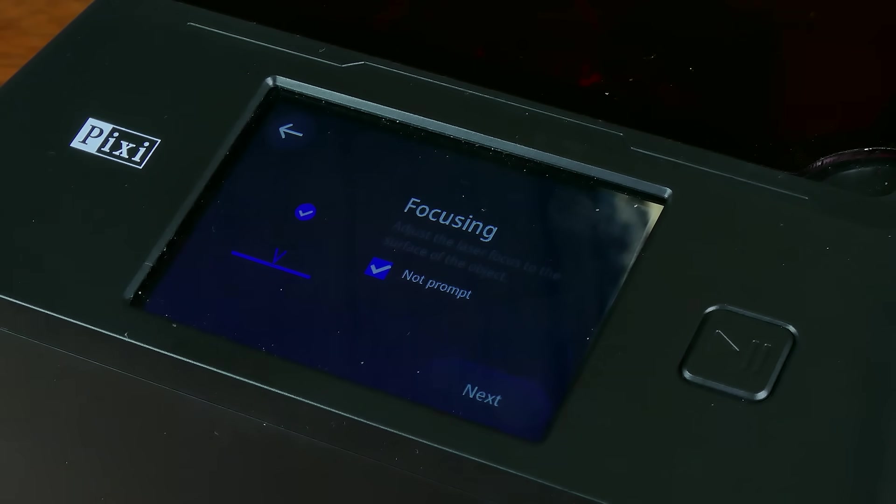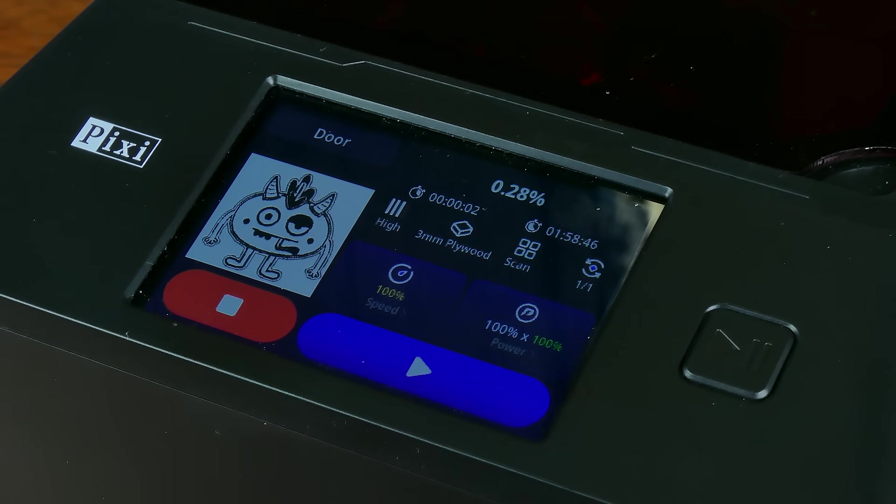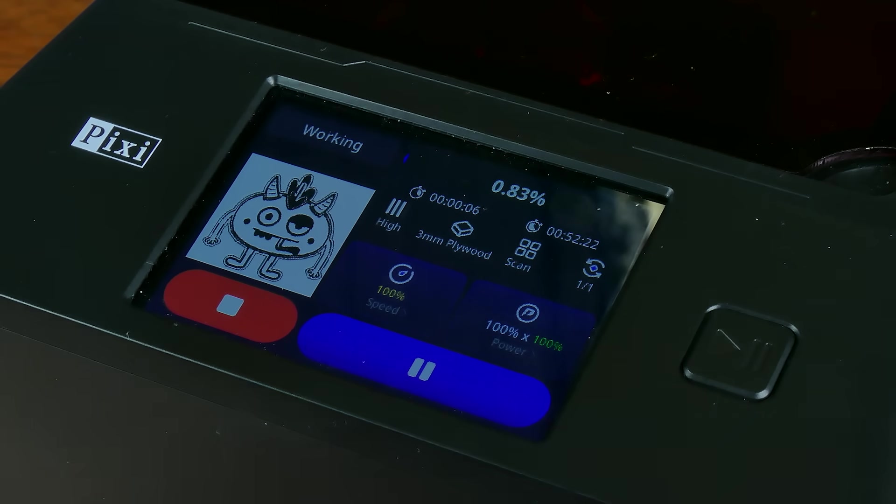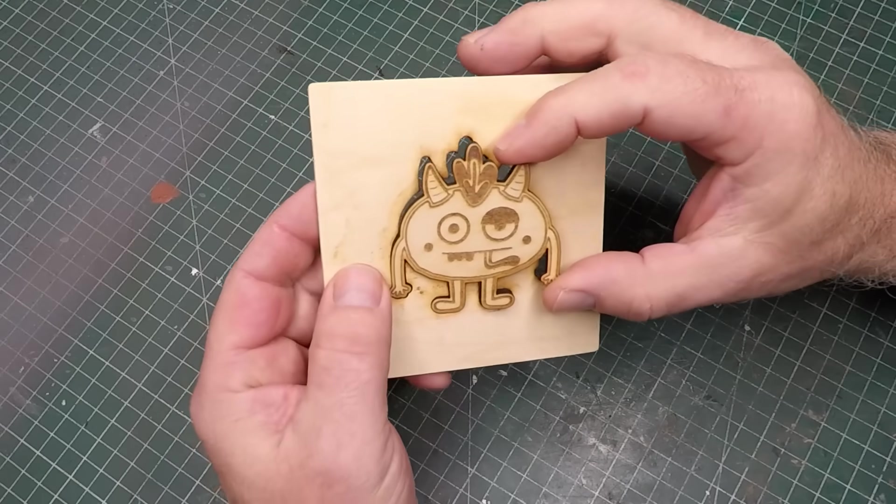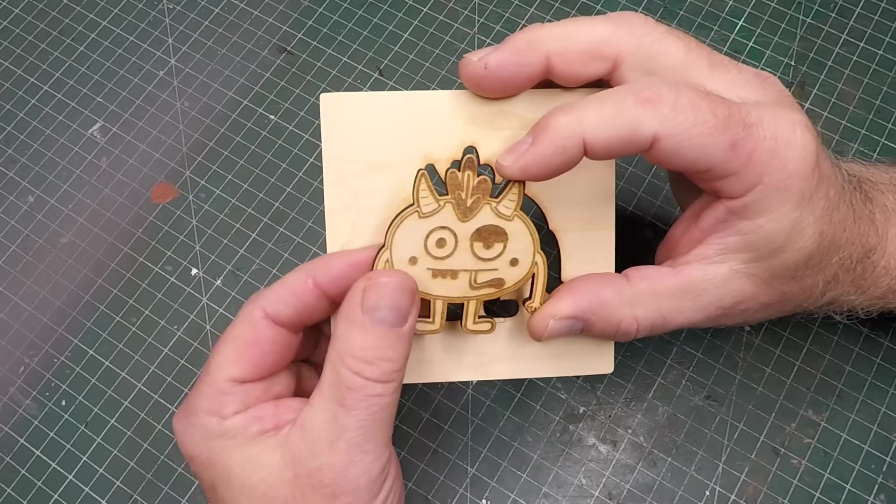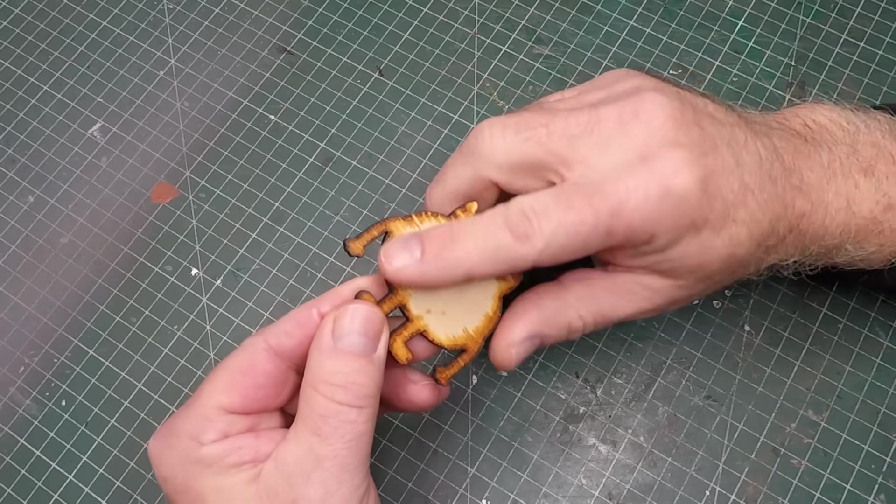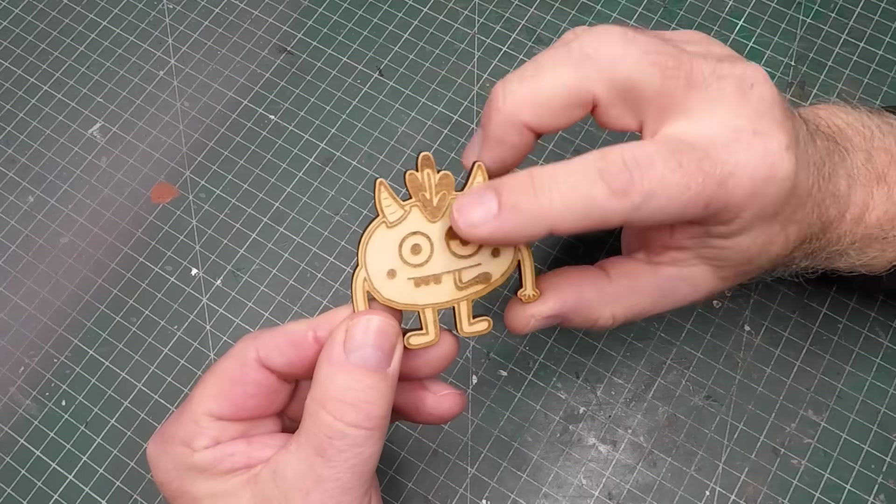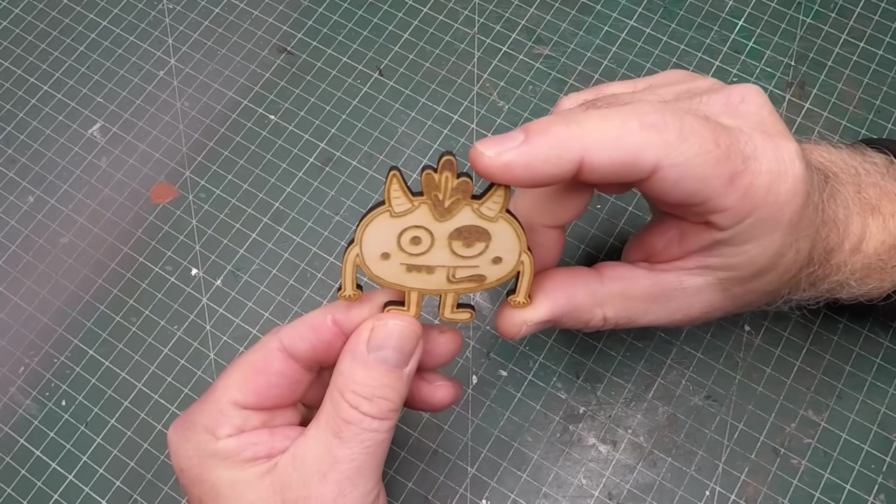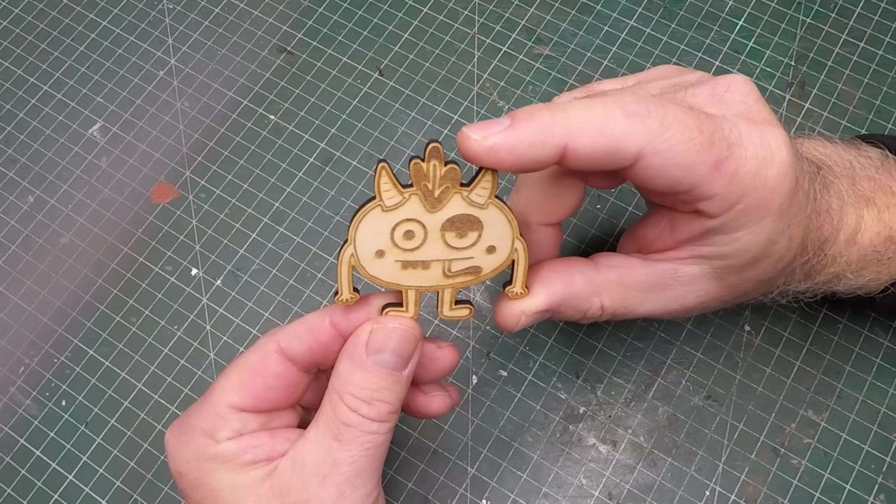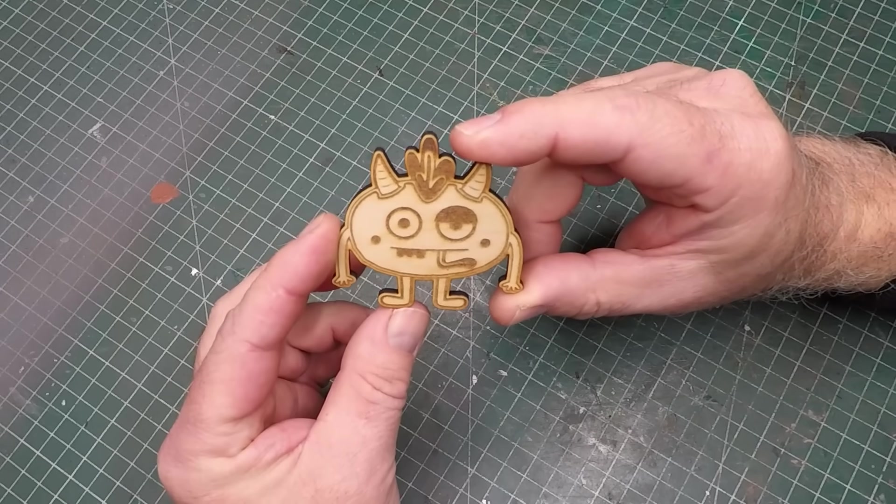Once we were happy with that, we hit next, then hit that center button, the home button, so the module moves to its original location, and the final step is to simply press start. It'll go through the project and this is what we end up with - three millimeter ply there. It's such a cute little creature thingamajiggy. I think it's come up pretty well. The back does have a bit of residue on it and that's because we're cutting on a flat surface, so you get that residue spill. Good start so far.